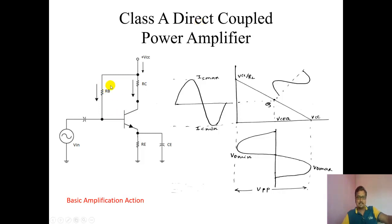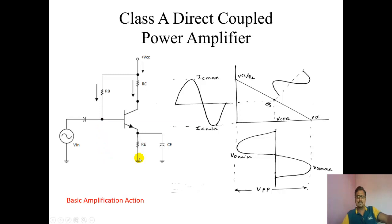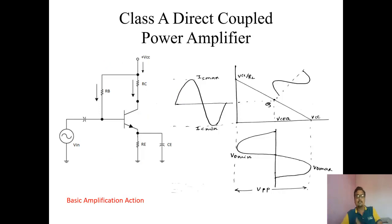RB is connected, and RB is the parallel combination of R1 and R2. You can connect R1 separately and R2 separately — R1 at the upper side and R2 at the lower side — and draw the same circuit diagram as we had in the RC coupled amplifier, that is, the RC coupled voltage amplifier. You can draw the same diagram because it is the same circuit diagram of a common emitter RC coupled single-stage amplifier.